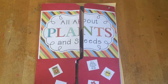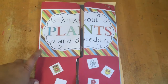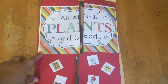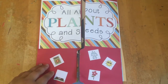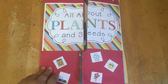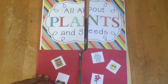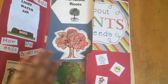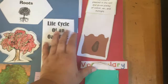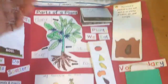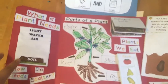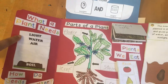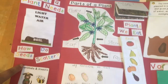This is our lap book. I got this lesson from Teachers Pay Teachers and I made it into a lap book — it wasn't necessarily meant to be a lap book, but we made it into one and it worked out really nice. It's all about plants and seeds, and when you open it, this is how it opens. We did what a plant needs and how do seeds scatter.